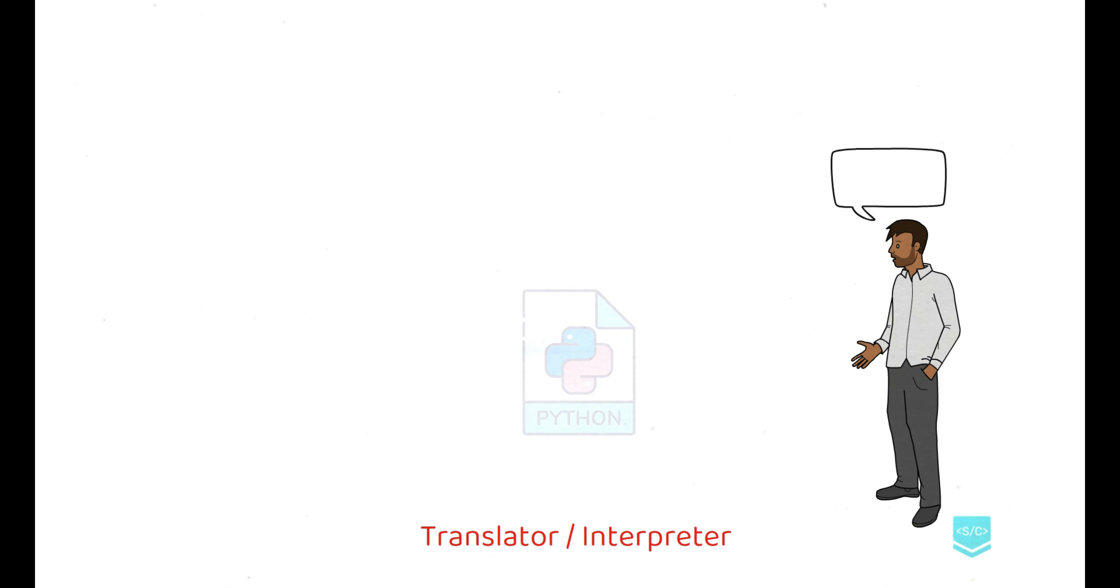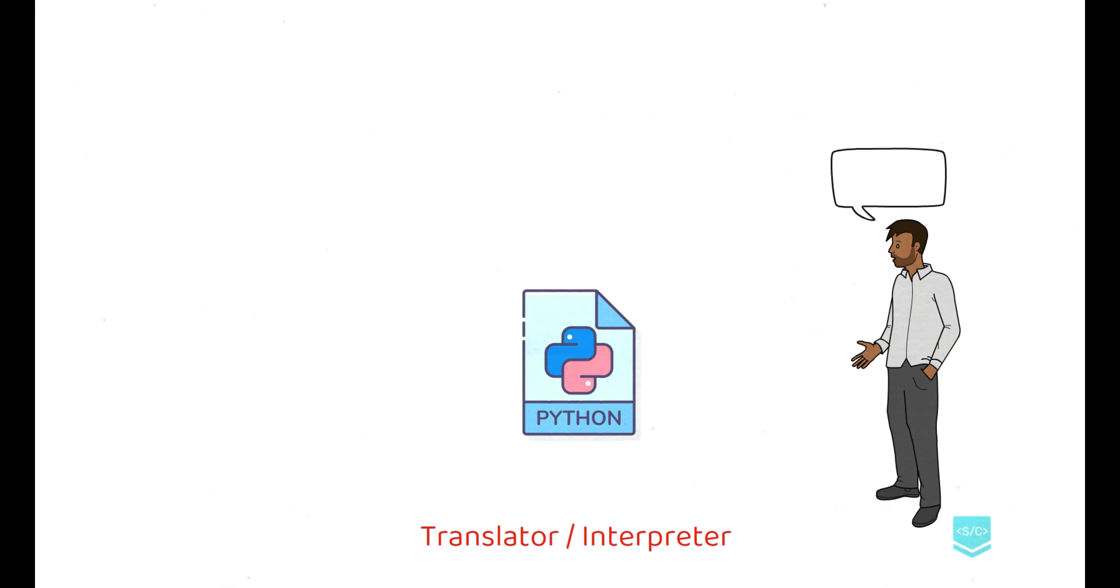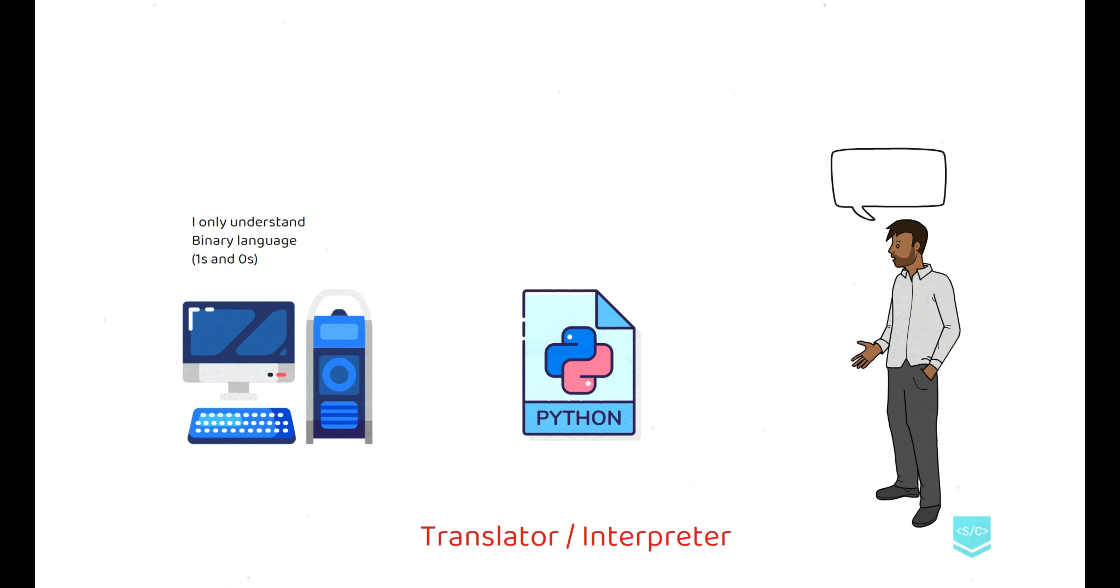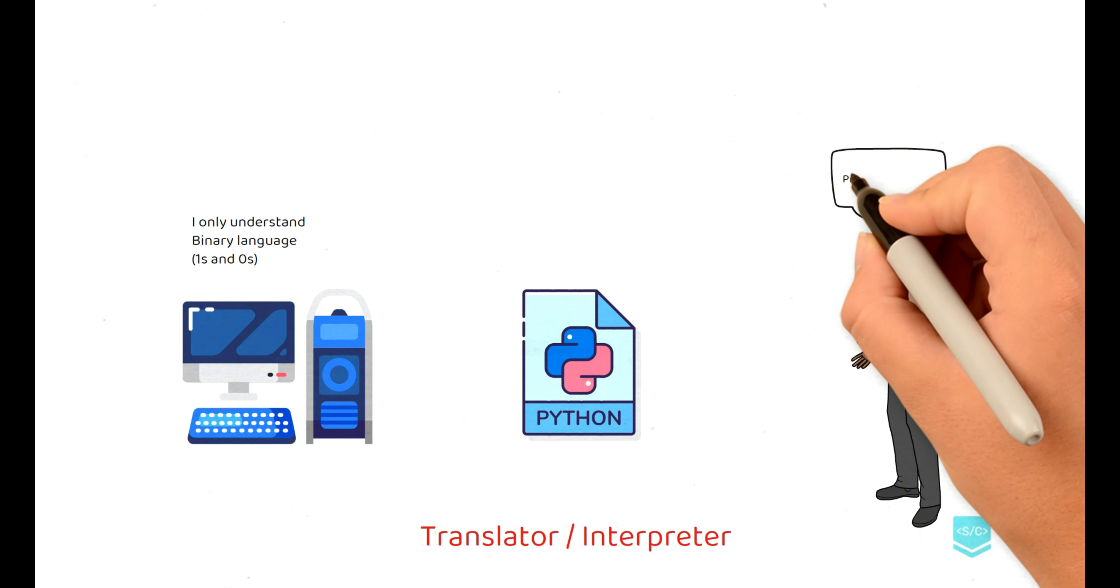And that is what the Python language is. When you want the computer to do something, you want to talk in ones and zeros. As humans, we cannot do that because we don't know how to speak ones and zeros. And that is where the Python language comes in.